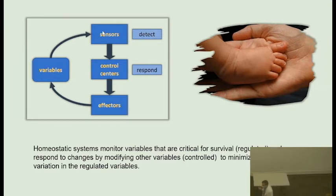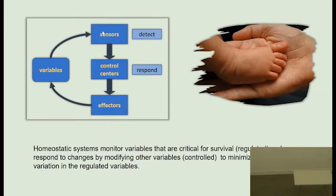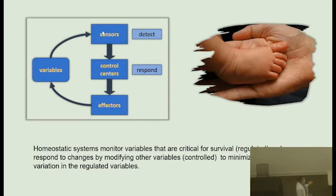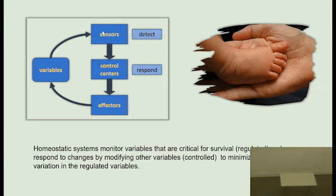We have sensors for blood pressure in the carotid bodies and in the aortic arch — baroreceptors. But we don't have any sensor that tells us the heart rate is too low or too high. So blood pressure is a regulated variable, and heart rate, for example, is a controlled variable.